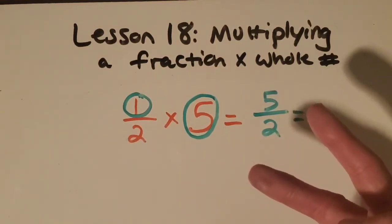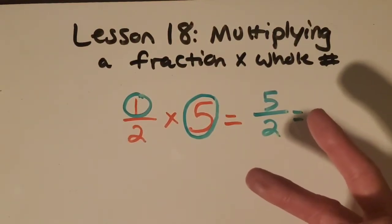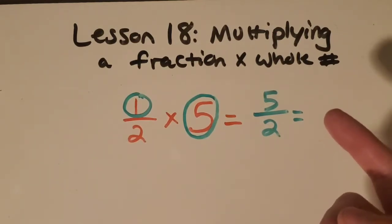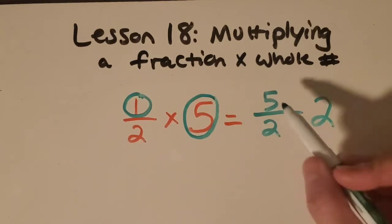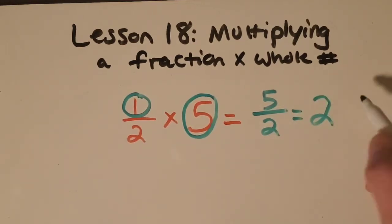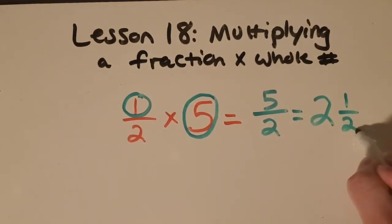So if I have two halves, that's one whole. Okay, four is two. And then five is just one more. So I just have one more half. So the answer is two and one-half.